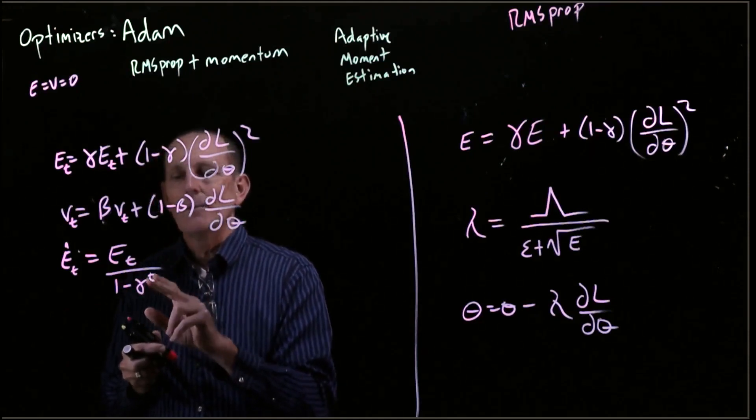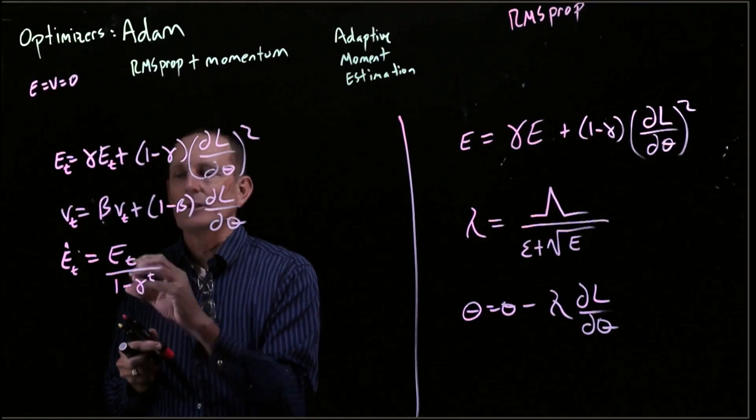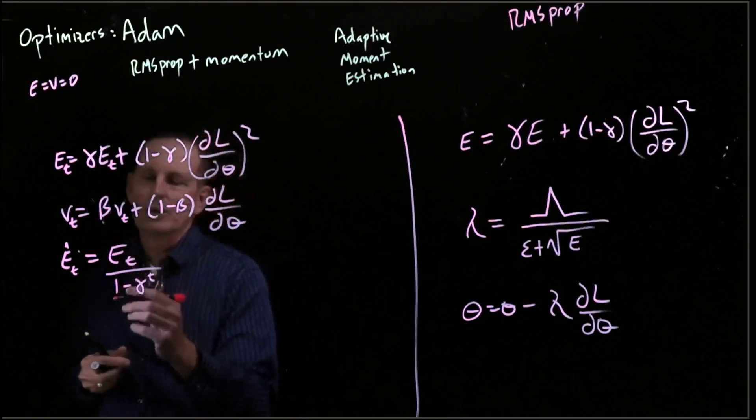And over time, as T gets larger, this alpha to the T gets smaller and smaller, and E to the T hat just approaches E.